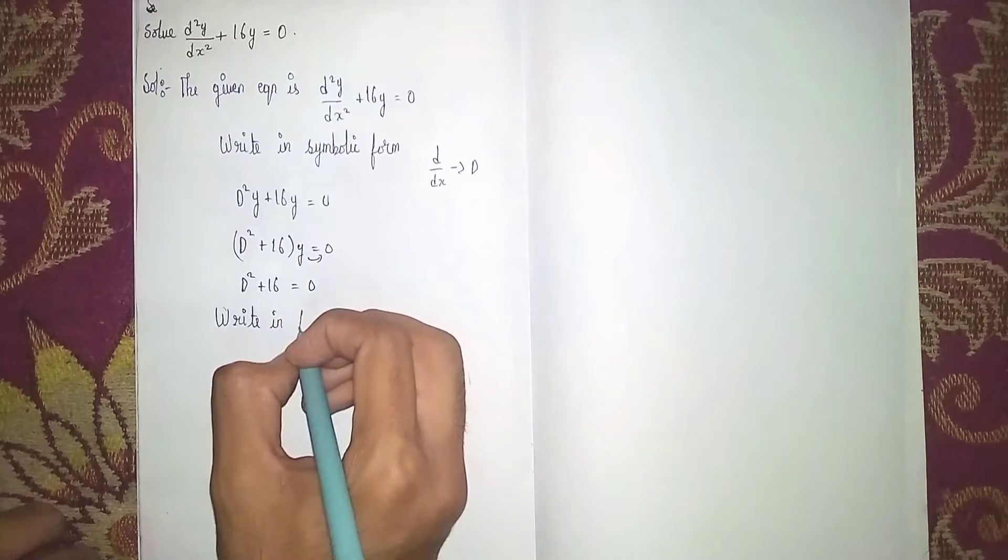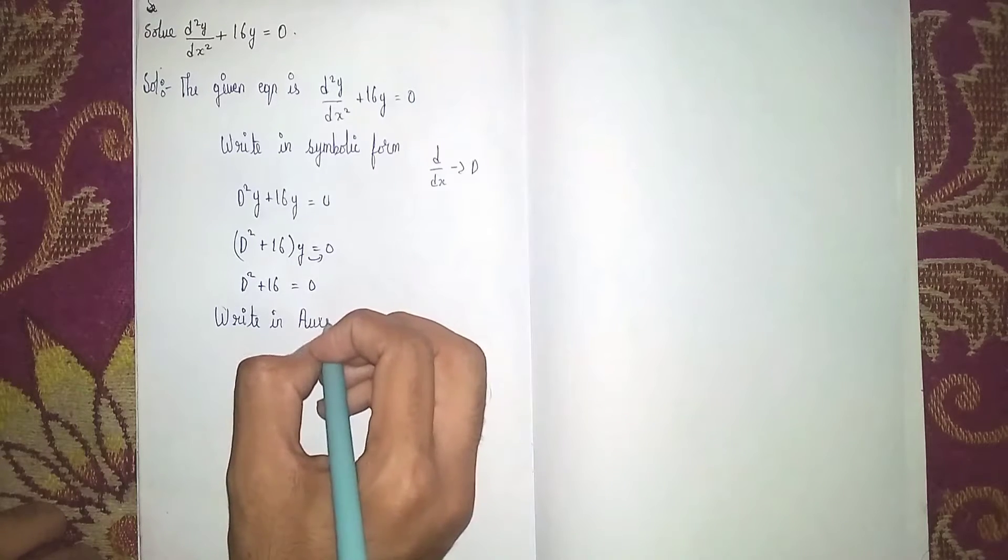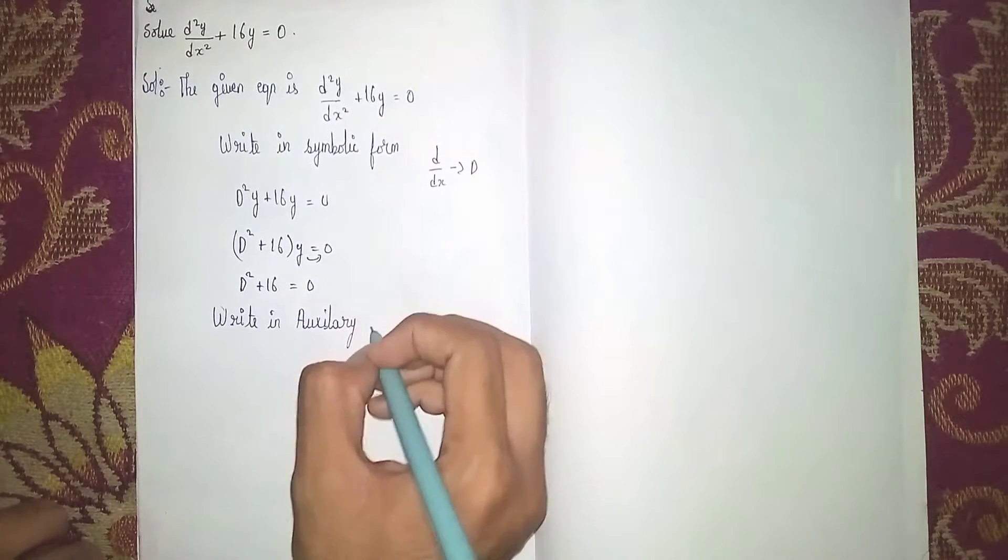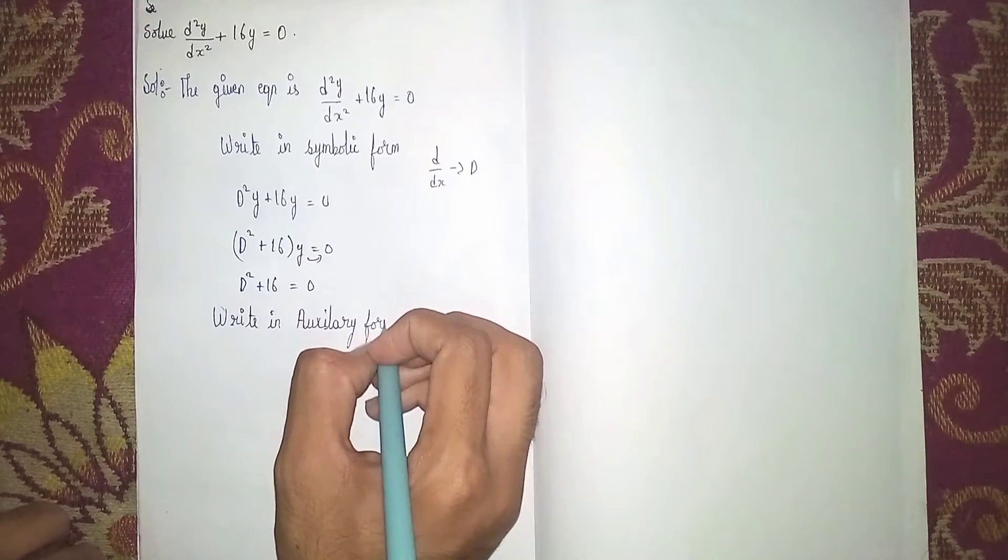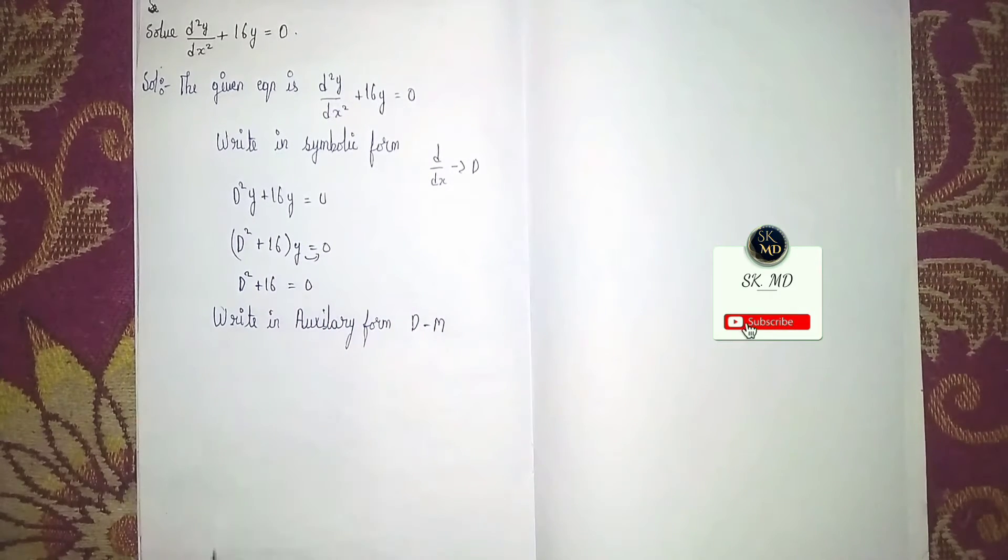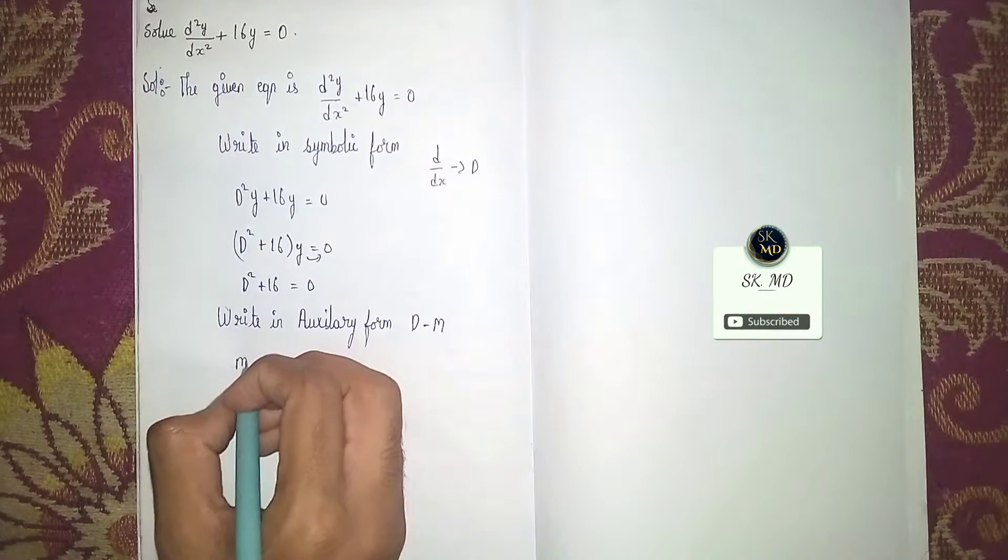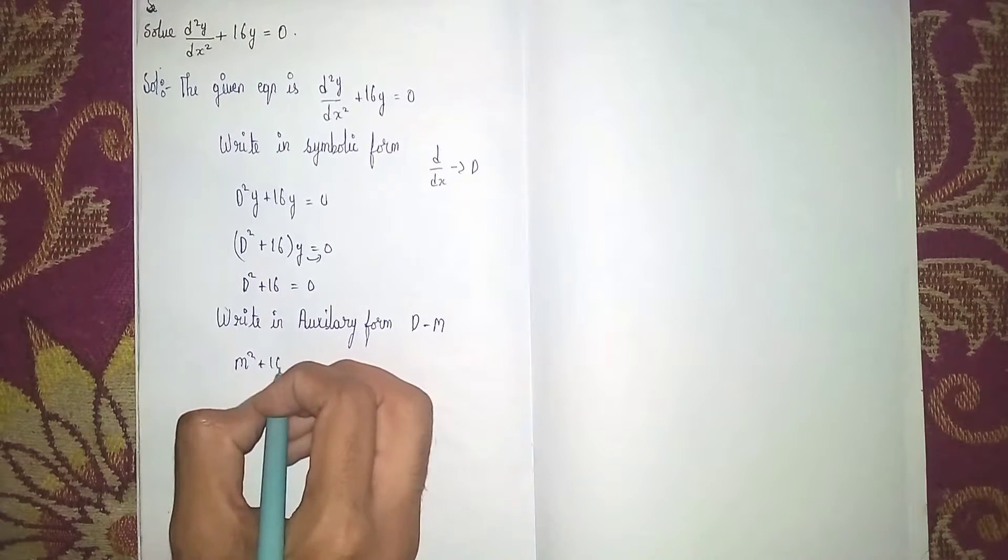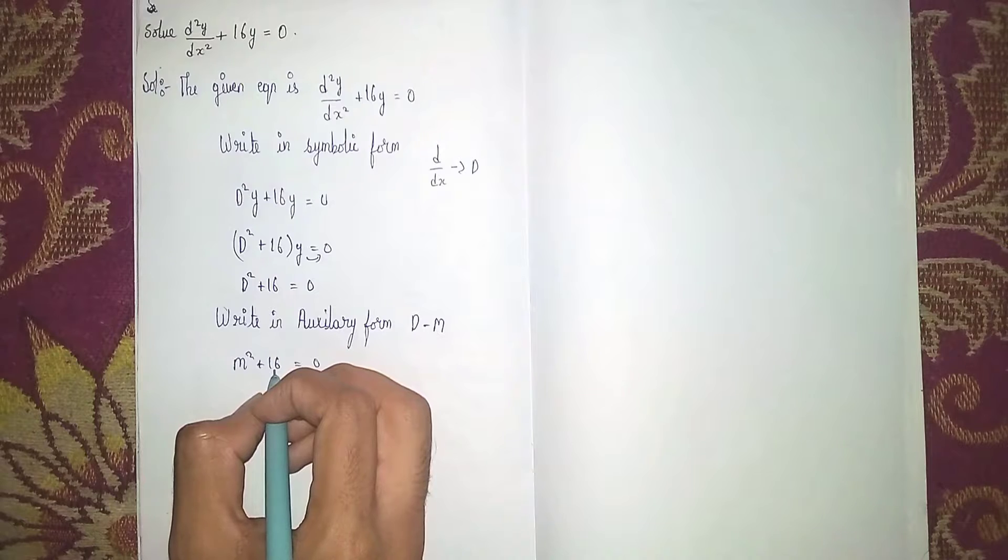Auxiliary form means instead of D, I write m. Why I'm writing to find the roots. So m squared plus 16 is equal to 0.